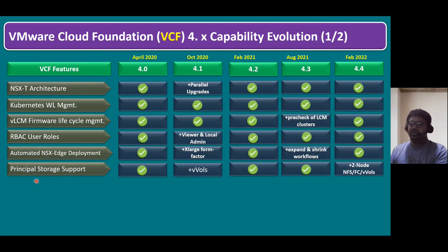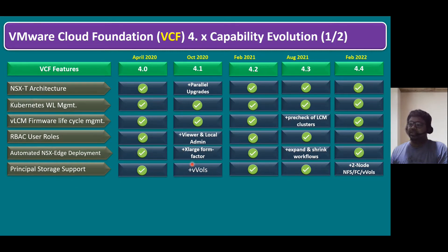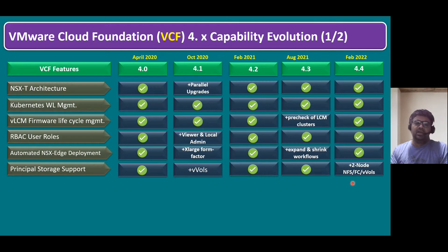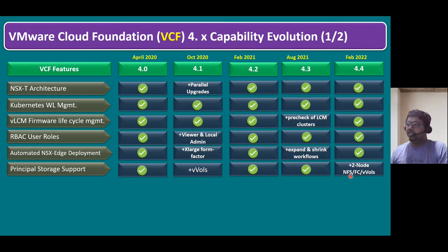Another VCF feature is principal storage support. VMware recommends configuring the management domain with vSAN storage, and for workload domains you can use third-party VCPP-certified storage solutions. In version 4.1, VMware officially added support for Virtual Volumes. In version 4.4, VCF also supports two-node deployment — previously a minimum of four nodes was required — configurable on NFS, Fibre Channel SAN, and Virtual Volumes.